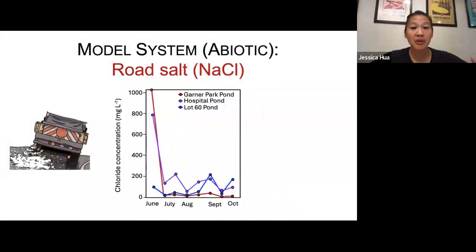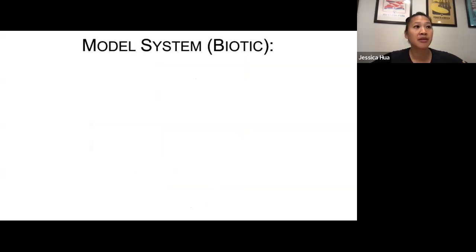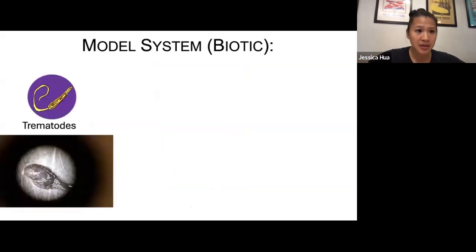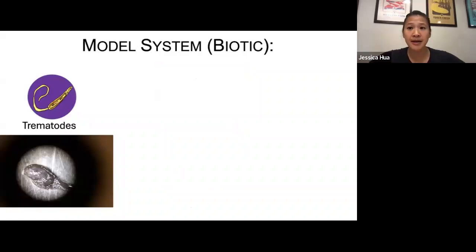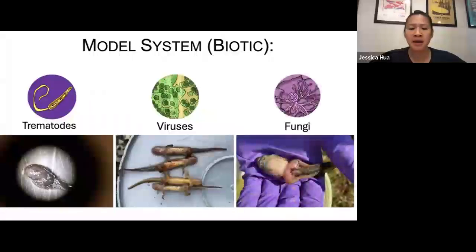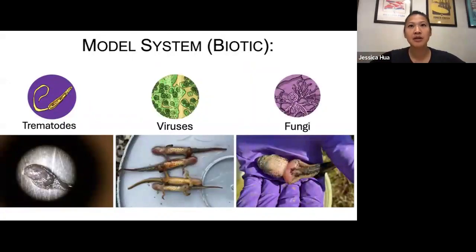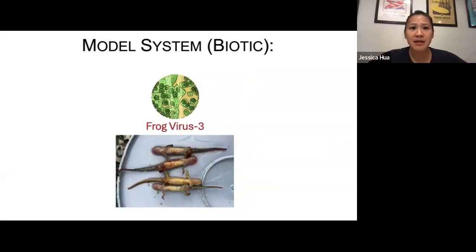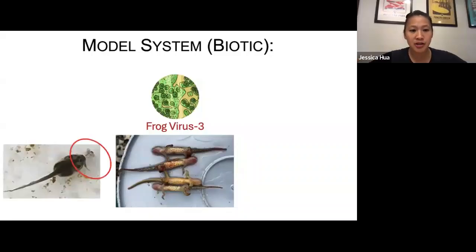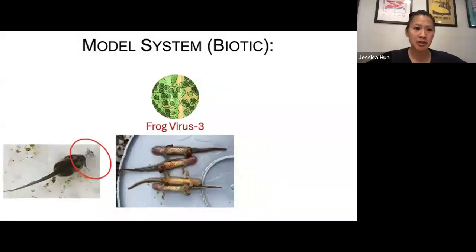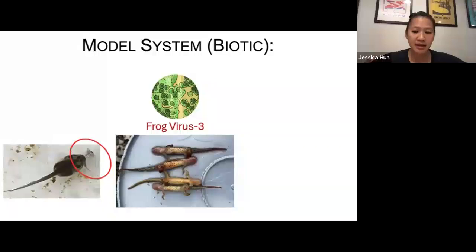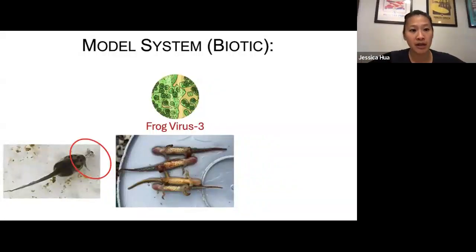In addition to stressors associated with pollutants, there are also natural stressors like parasites and pathogens. Amphibians are vulnerable to a wide diversity of pathogens, including trematodes, viruses, and fungi. You may have heard of the BD fungus, a pathogen causing declines worldwide. Today I'll be telling you about Frog Virus 3 — a very common virus in pond ecosystems. It is transmitted via direct contact, including necrophagy — the consumption of dead conspecifics — which is one very easy way to transmit the virus.